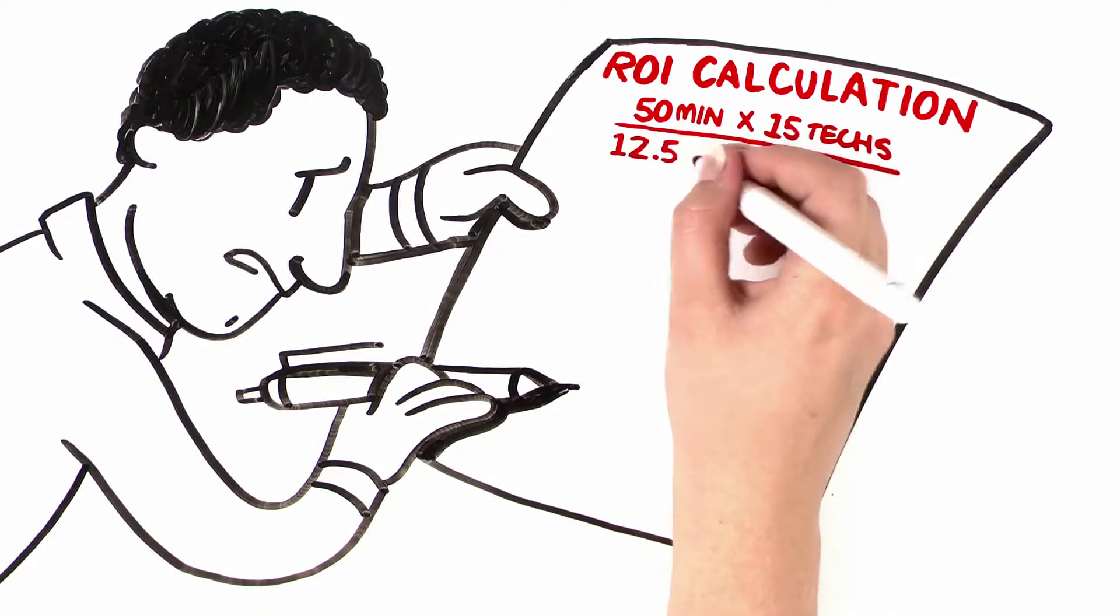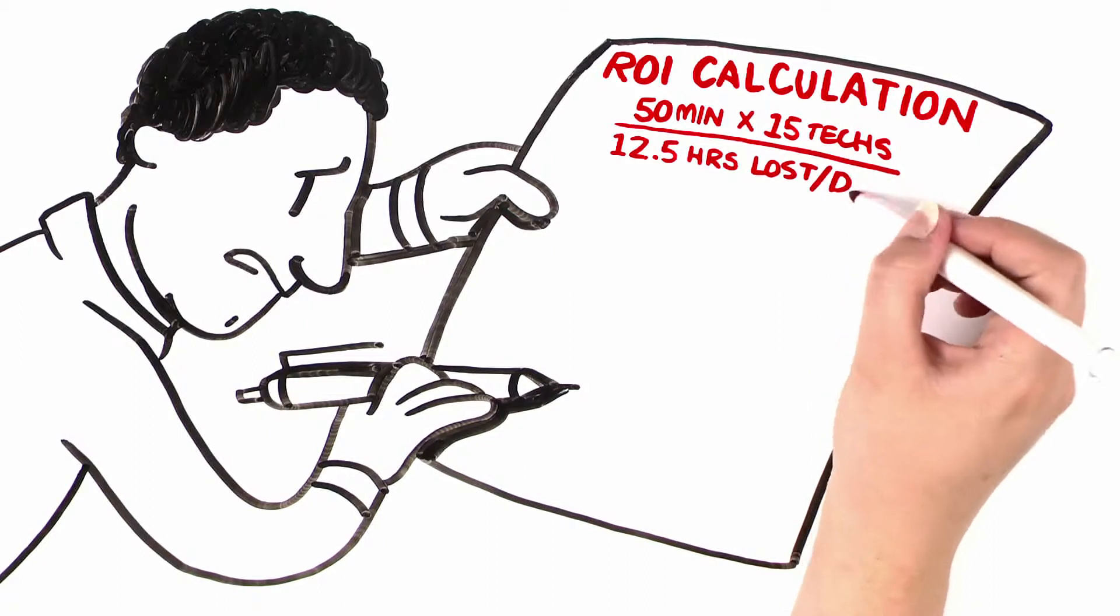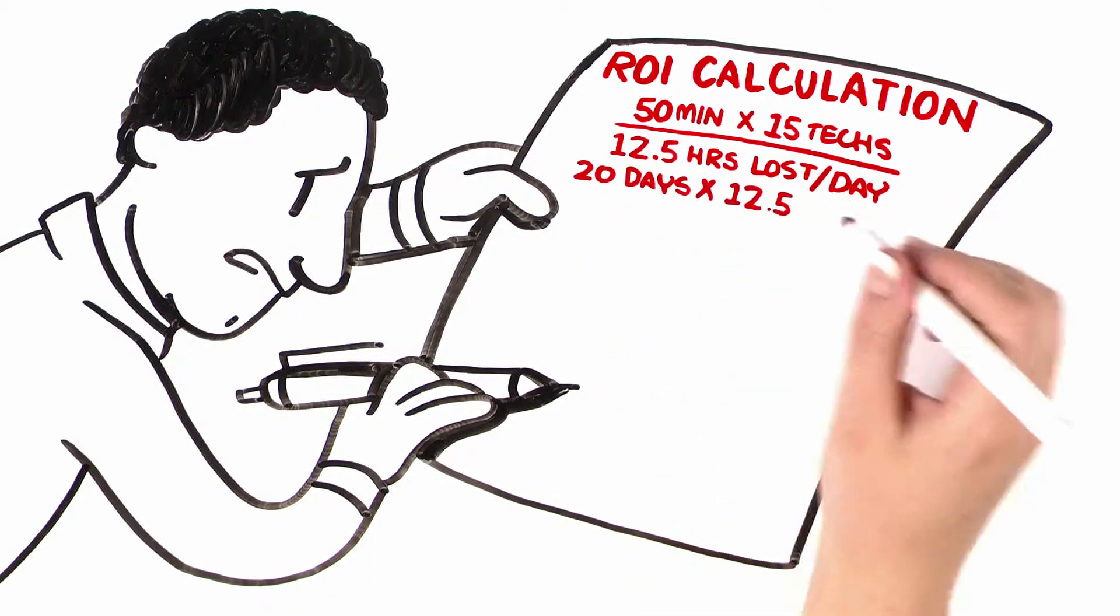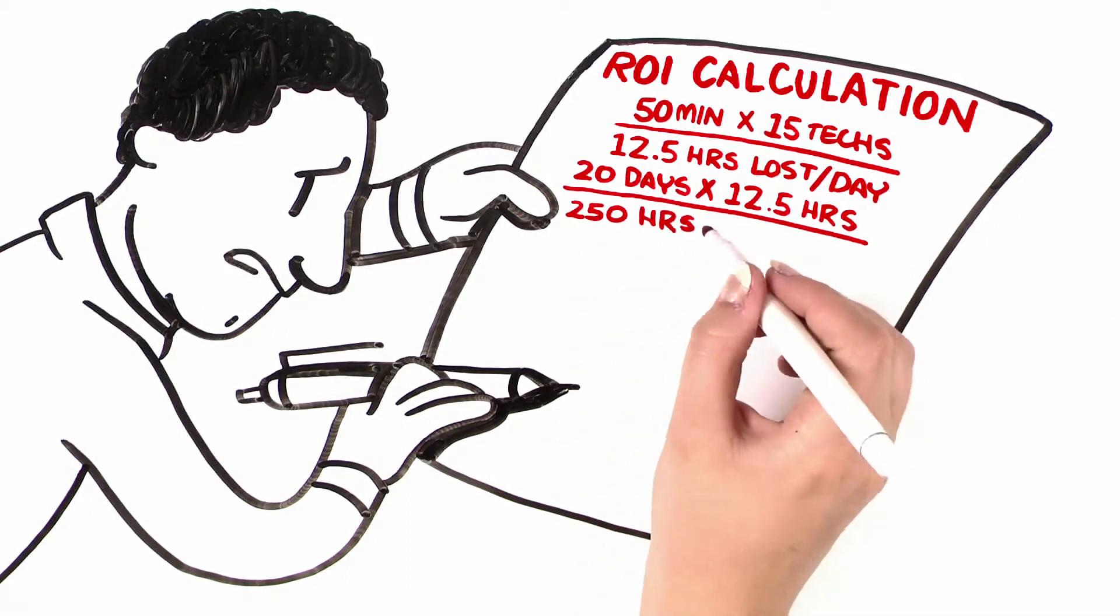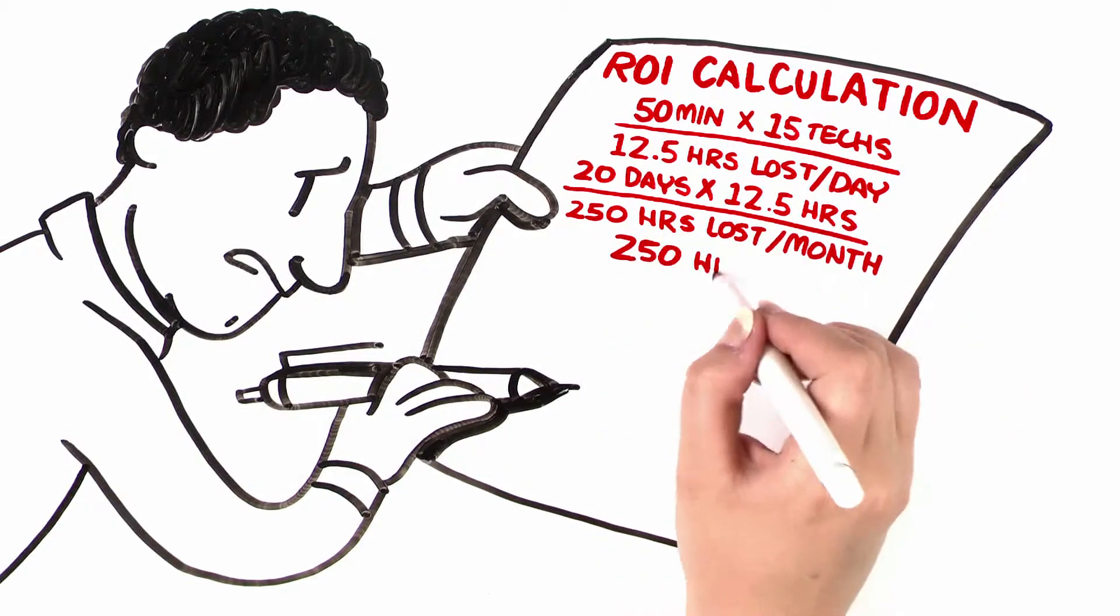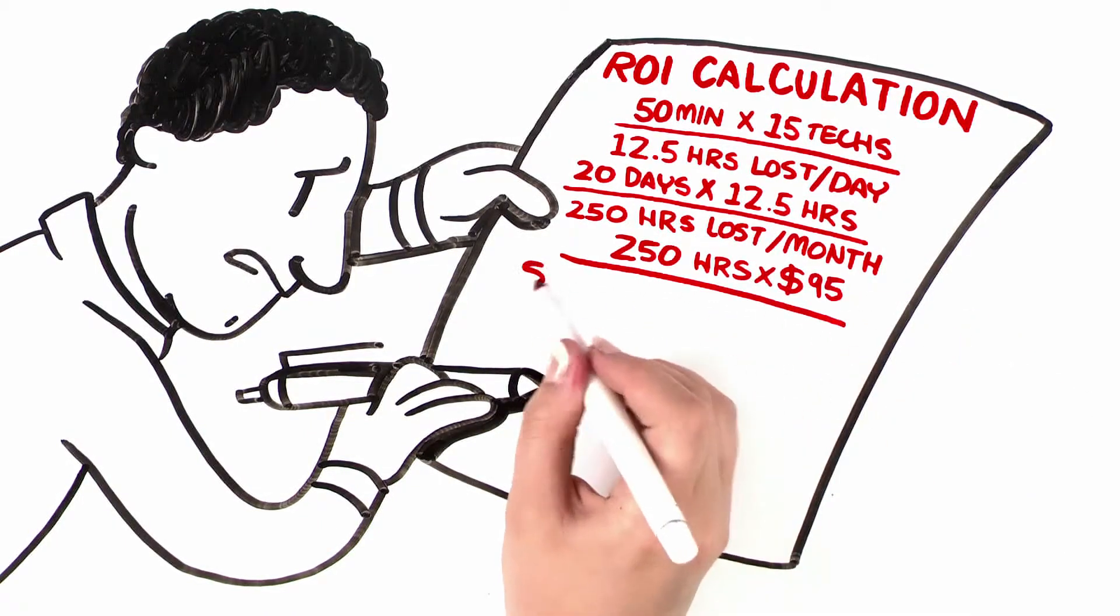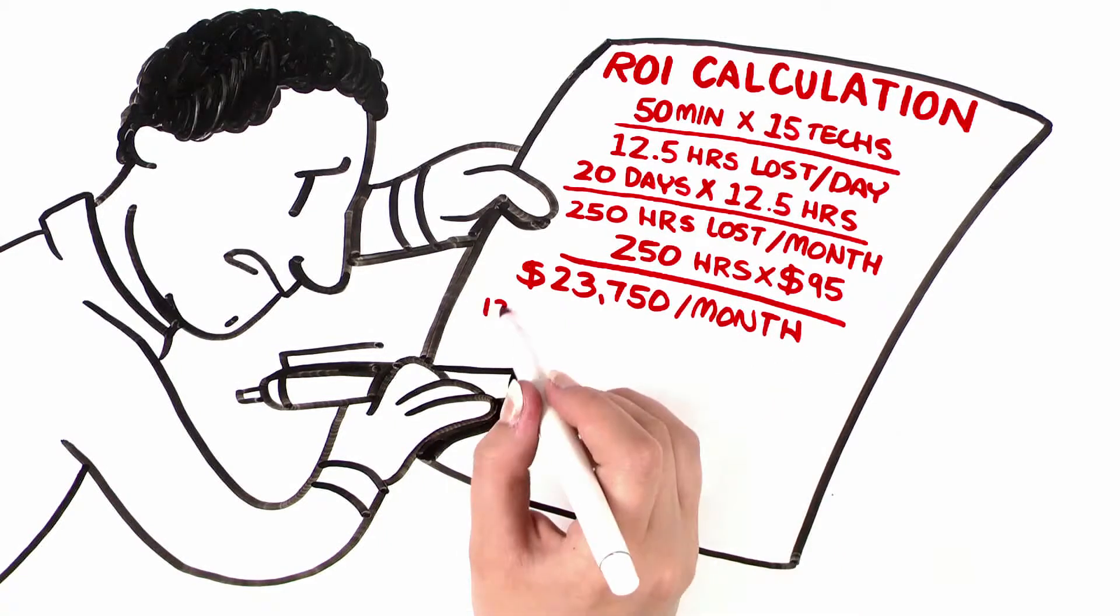If you have 15 techs, that's a loss of 12.5 hours per day. In a 20-day work month, that's 250 hours lost per month, and at a $95 per hour rate, that's a whopping $23,750 per month.